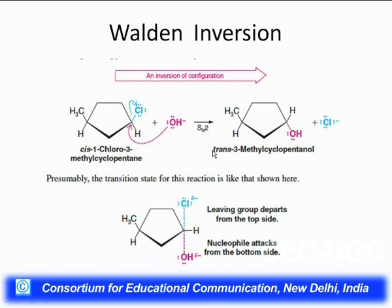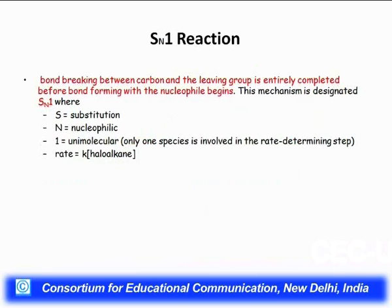To summarize SN2 reactions: bond formation and bond cleavage take place simultaneously; the nucleophile attacks from 180 degrees opposite the leaving group, so the reaction is accompanied by inversion in configuration. If the starting compound has R configuration, the product will have S configuration. Since the attack must come from the backside, the substrate should not be hindered. Primary alkyl halides are most reactive in SN2, followed by secondary, while tertiary are essentially unreactive.